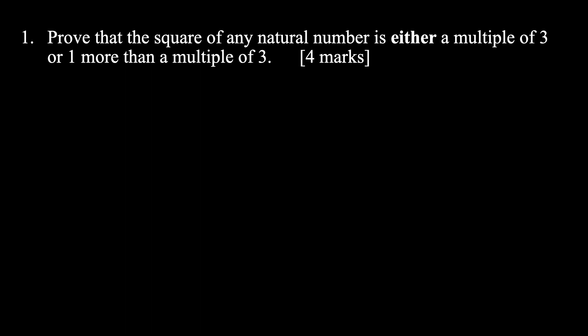This question says: prove that the square of any natural number is either a multiple of three or one more than a multiple of three. This is an exam question from a past paper worth four marks. When you get an algebraic proof question like this, you want to think about how you can represent the natural numbers as an expression, and then think about squaring that. Because we're squaring natural numbers and want to prove it's a multiple of three or one more, we want to represent the natural numbers in terms of multiples of three.